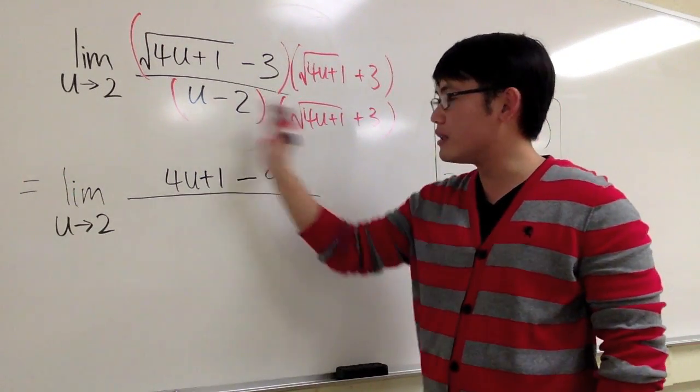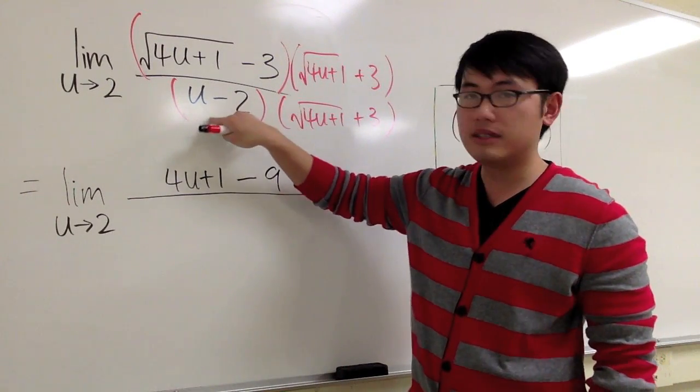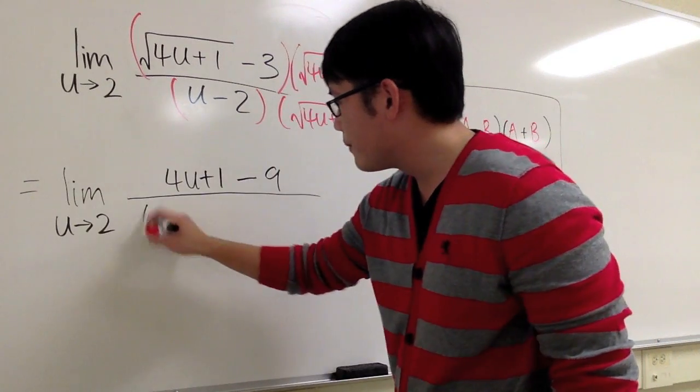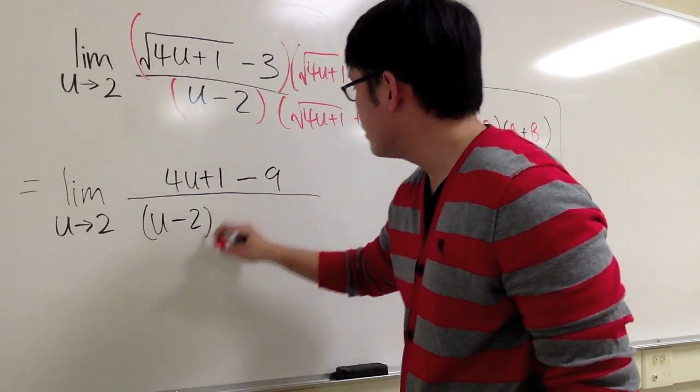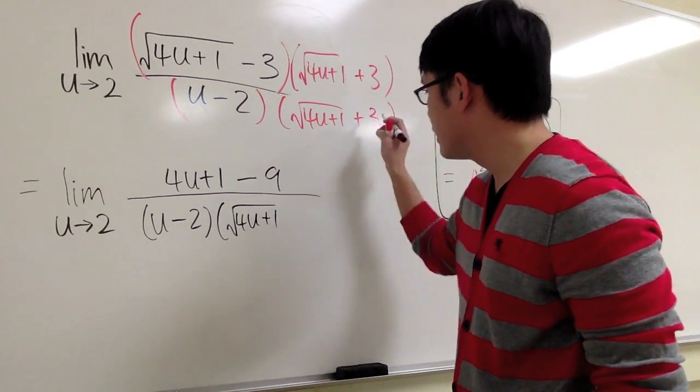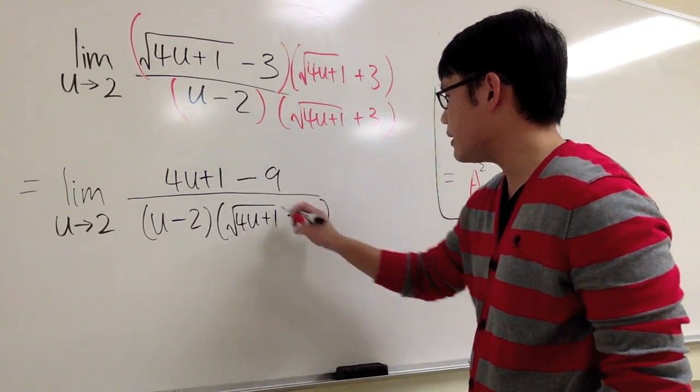We are not going to multiply the denominator because I didn't want to fix this. Just keep it as it is. That's the trick. So u minus 2 times this, square root of 4u plus 1 and then plus 3.